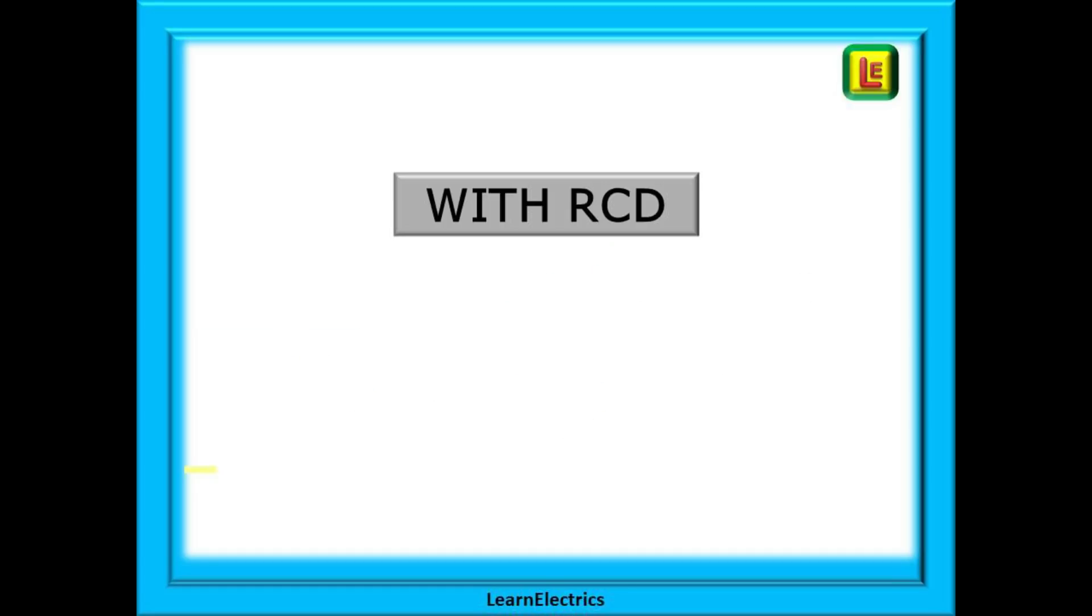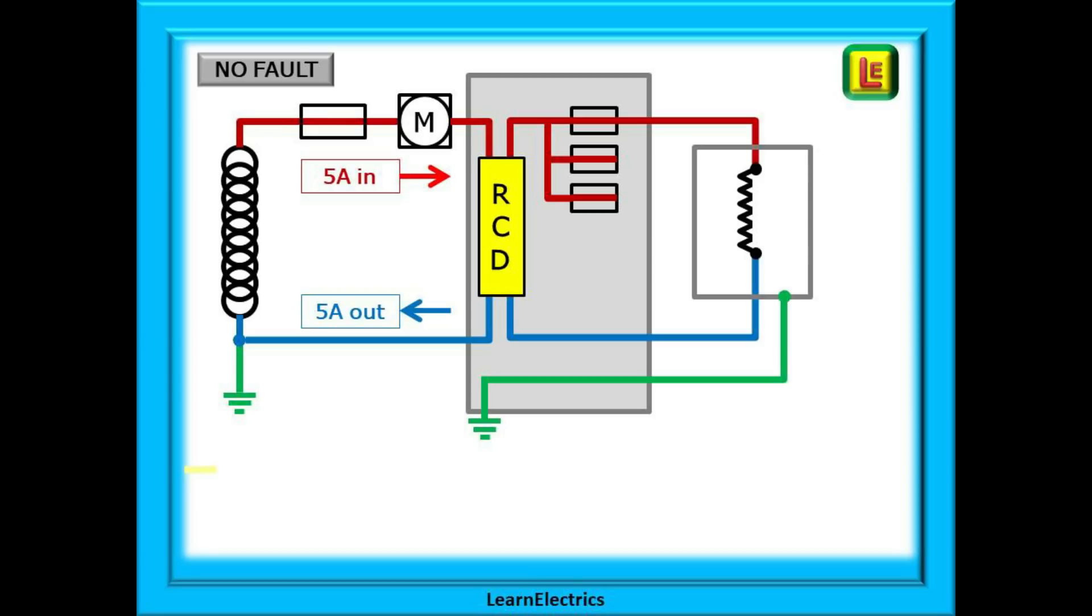So let's install an RCD and see what difference this makes to the safety of the installation. Here we have the RCD installed in the consumer unit. There is no fault with the circuit and 5 amps flows along the line and into the appliance and 5 amps then flows back along the neutral and all is good. Now though, the appliance develops a fault. There is an earth fault and 3.8 amps of current as before now flows to earth. All the metal work in the house becomes energized. We could have a situation where the 5 amps still flows into the appliance and the 3.8 amps of fault current as well. So let's do this.